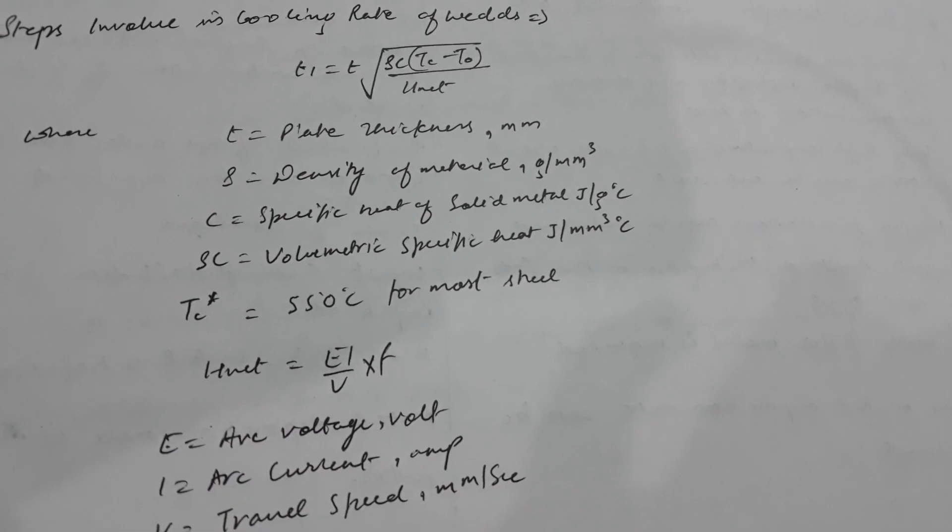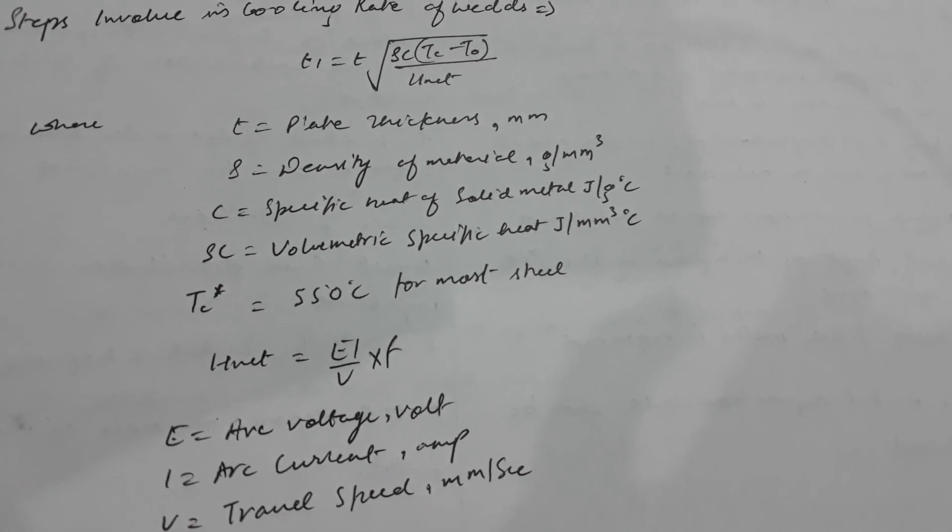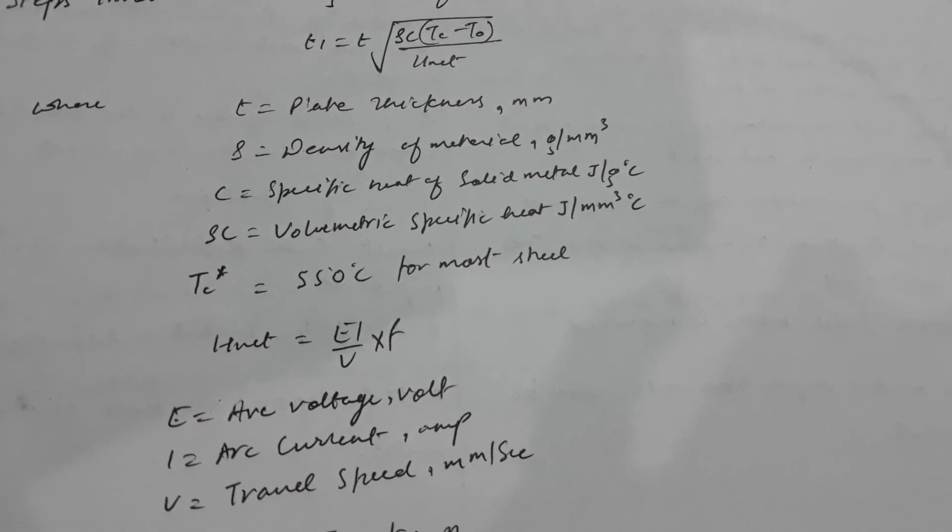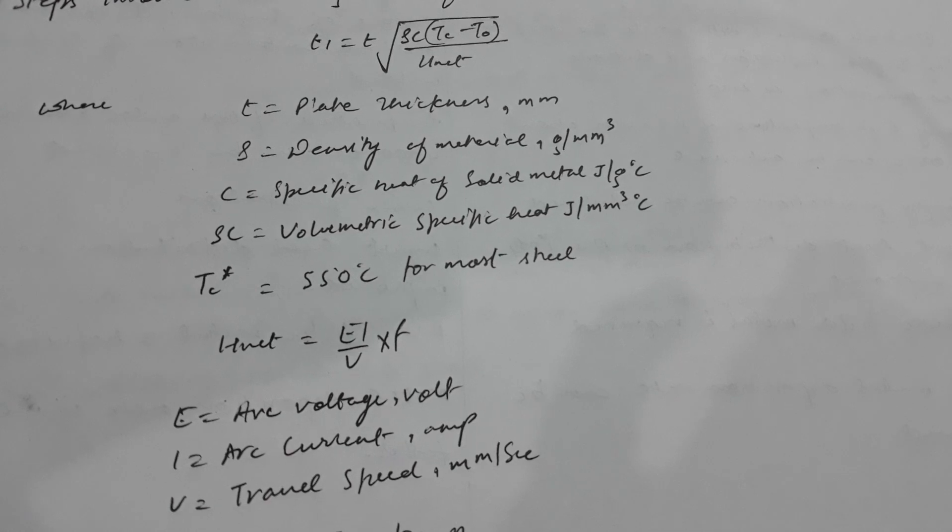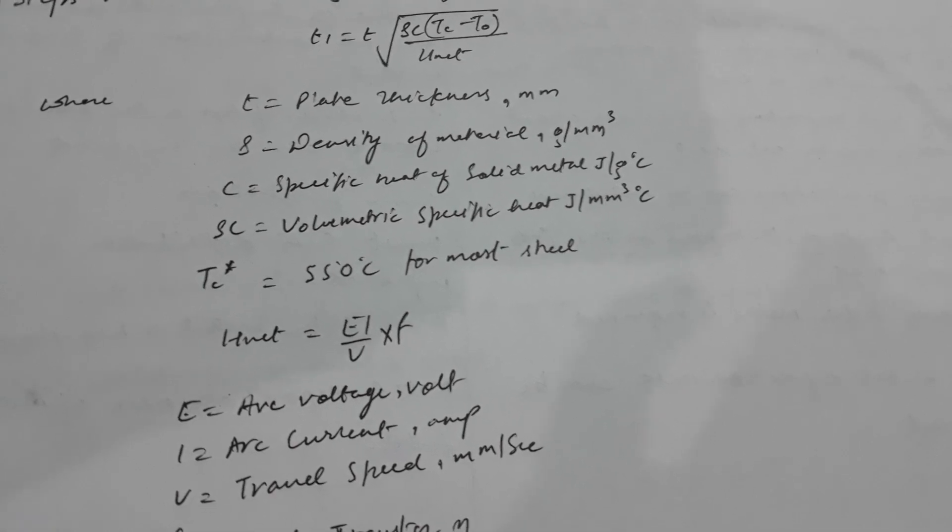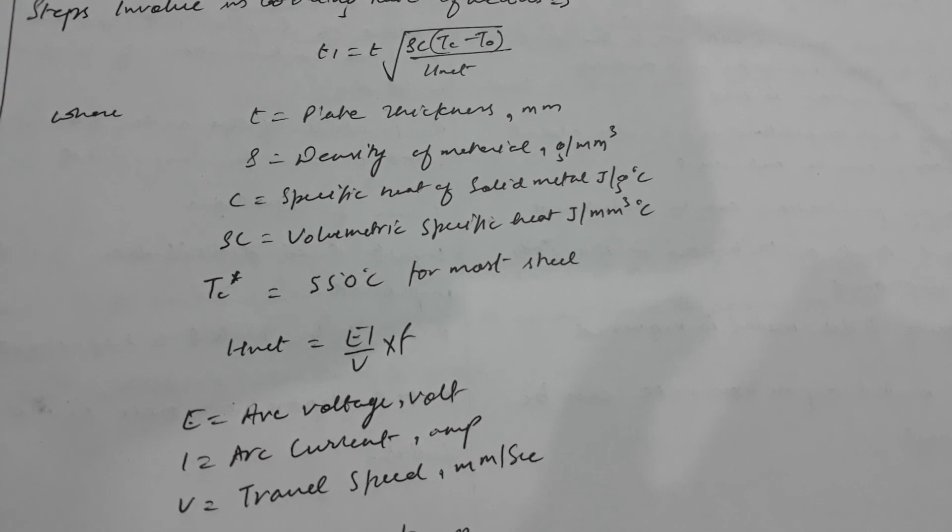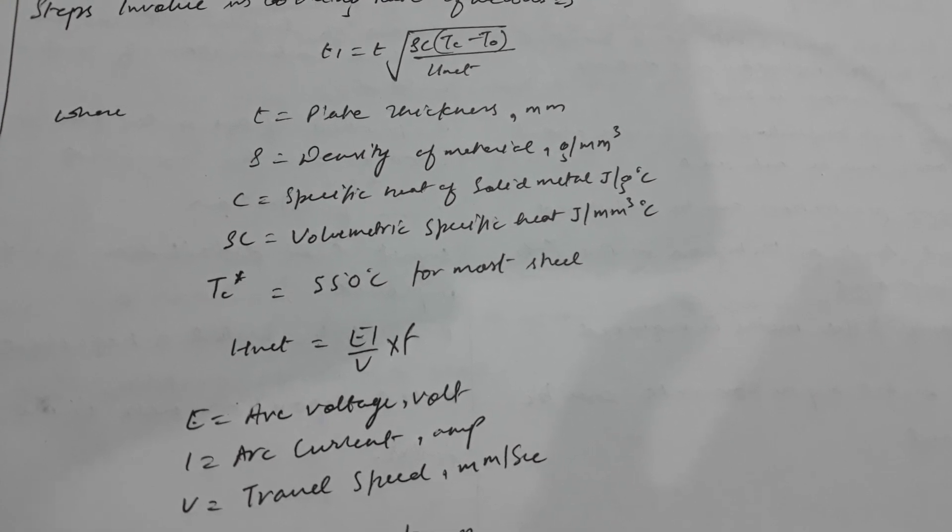Where t is the plate thickness in millimeters, rho is the density of material in grams per millimeter cubed, c is the specific heat of solid metal in joules per gram degree centigrade, rho c is the volumetric specific heat in joules per millimeter cubed degree centigrade, and tc is equals to 550 degrees centigrade for most steel.